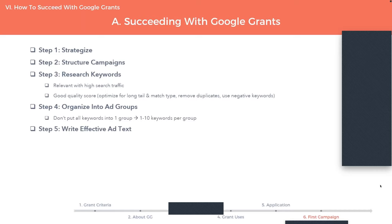Step five is to write effective ad text. Ad text is basically what is shown to someone in the search results when your ad appears. The best advice is to write at least two variations — that's a rule that the program has. But ideally I'd recommend three variations of ad text per ad group. You never really know the best way to capture your audience — you need to experiment with different versions of your messaging, let the data speak for itself, and the data will tell you which version more people are engaging with. You have to go through this process of testing.